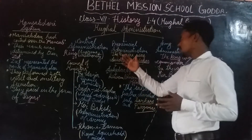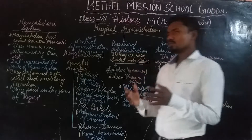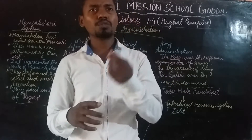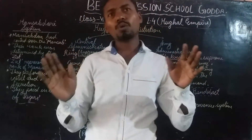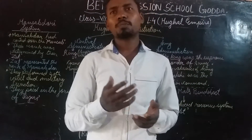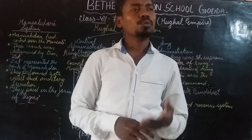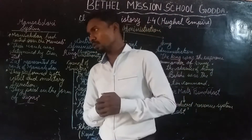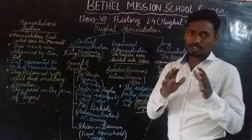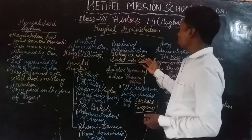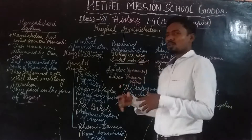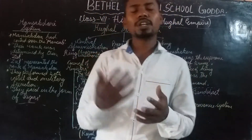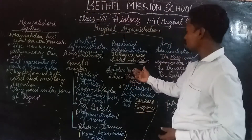Now we will move towards the provincial administration. If the empire is quite big, it is not easy for the king or the council of ministers to travel through the whole country and solve problems, collect taxes, or do development work. So to deal with that, the whole empire was divided into subas — you can understand these just like the present-day states. As we have countries divided into states, similarly the empire was divided into subas.